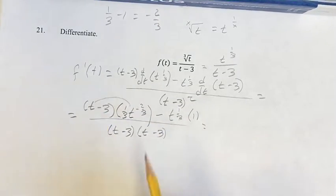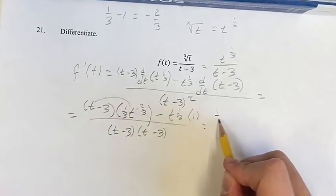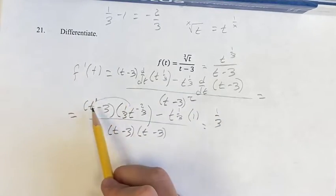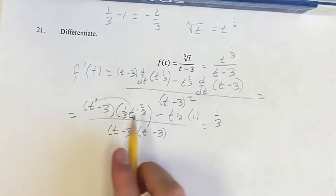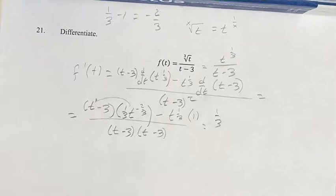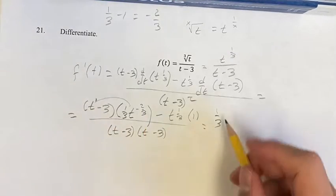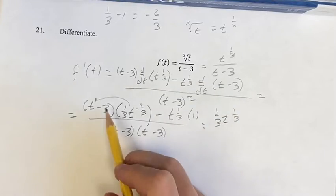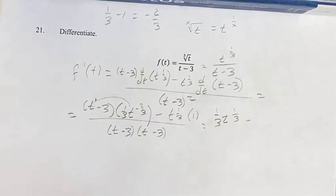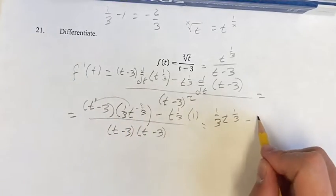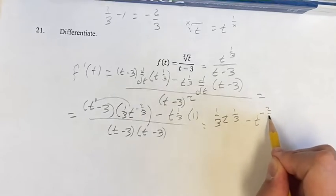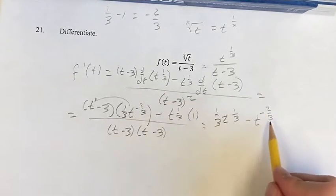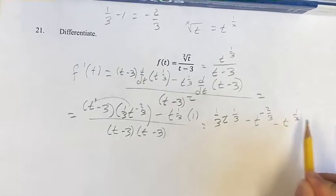And this is equal to, distributing out, we have 1 third t to the 1 times t to the negative 2 thirds. When you're multiplying two terms with the same base, you add their exponents, so we have 1 minus 2 thirds, so t to the 1 third. Minus 3 times 1 third is minus 1, t to the negative 2 thirds. And then minus t to the 1 third times 1 is just t to the 1 third.